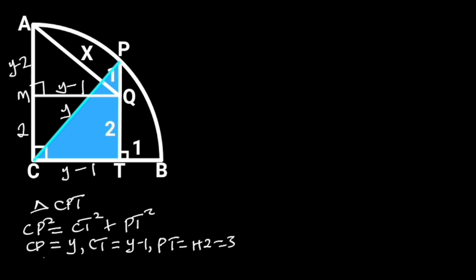Substituting these values in this formula will give us Y squared is equal to Y minus 1 squared plus 3 squared. Y squared is equal to Y squared minus 2Y plus 1 plus 9.